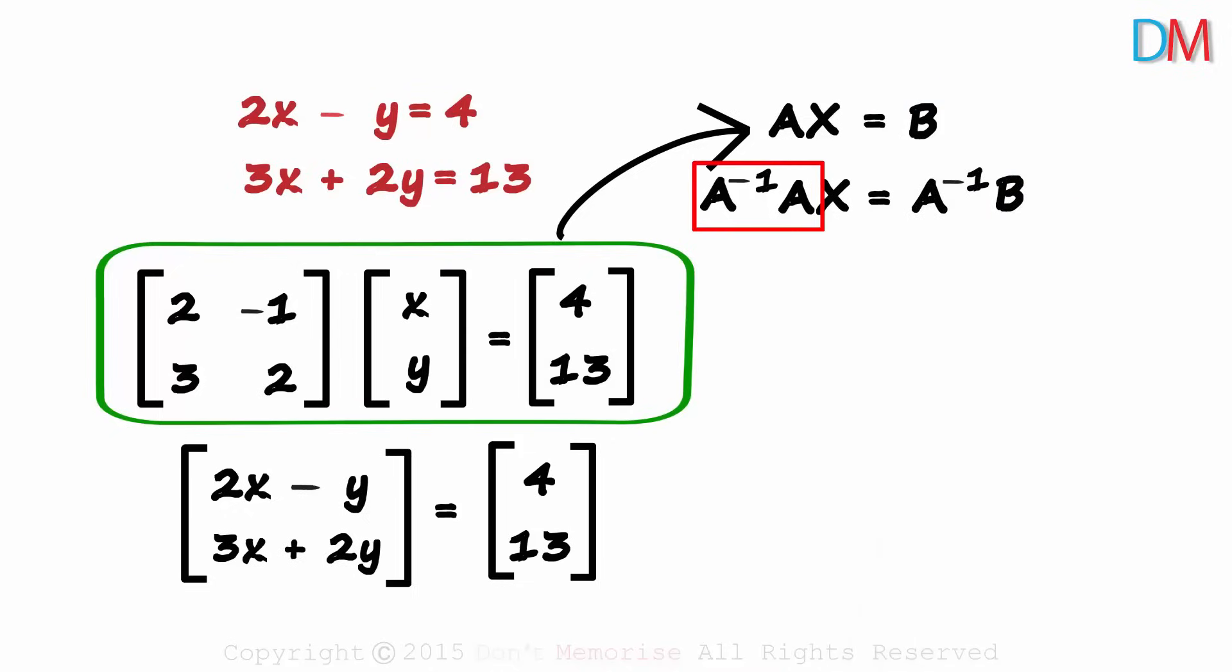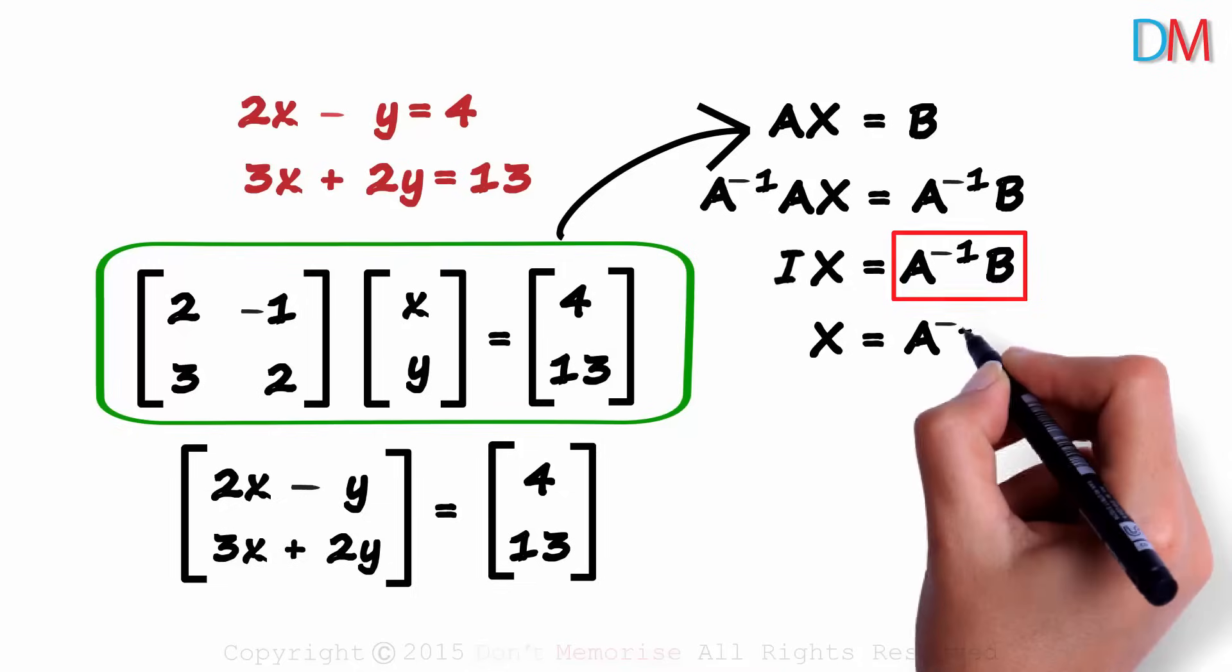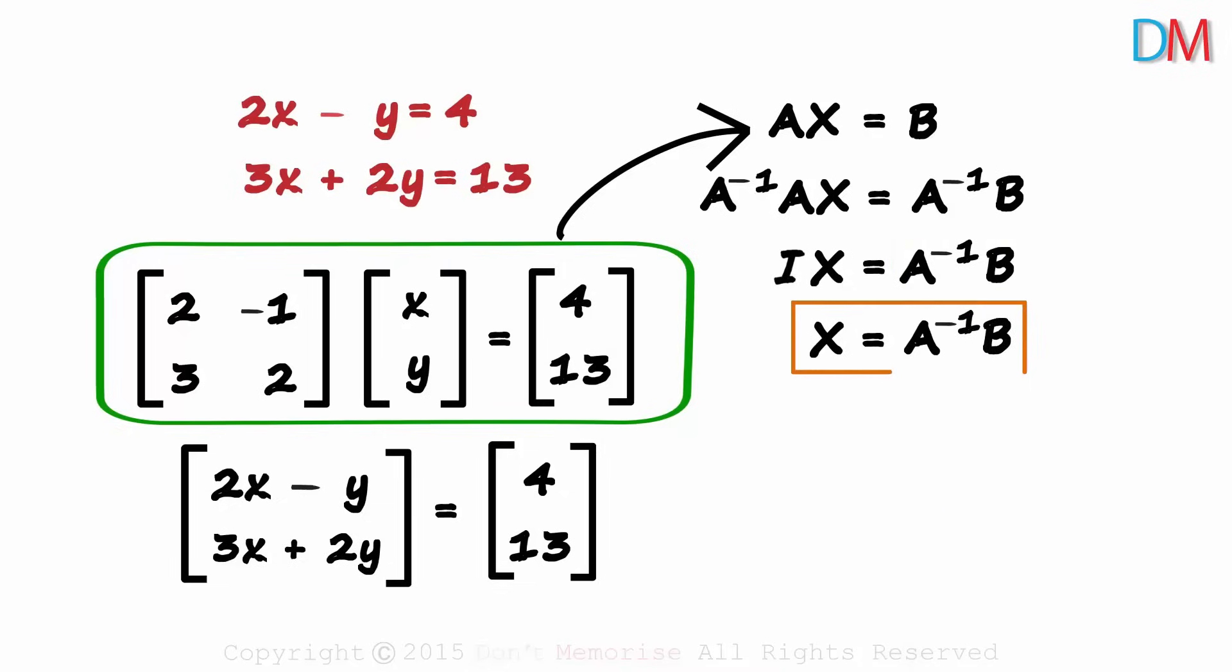Now A inverse times A will equal the identity matrix. We get this. And we know that the identity matrix times any matrix will give us that same matrix. So the left hand side will equal matrix X. And the right hand side will be A inverse times matrix B. That's how we get matrix X. We multiply A inverse with B.